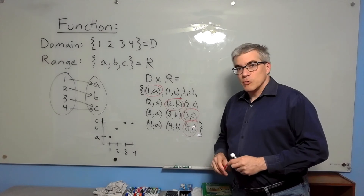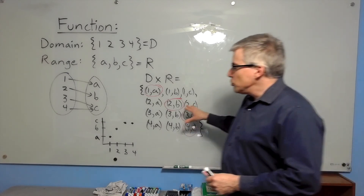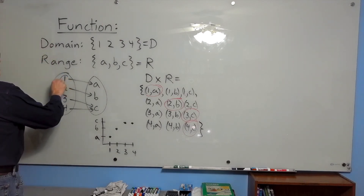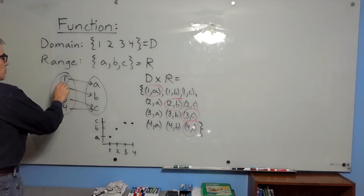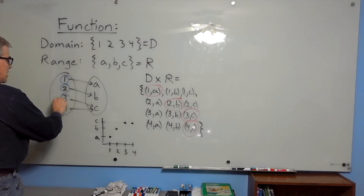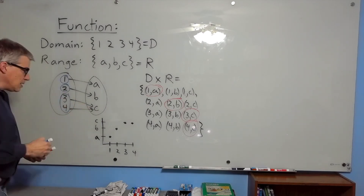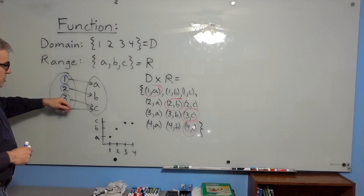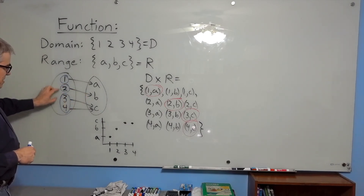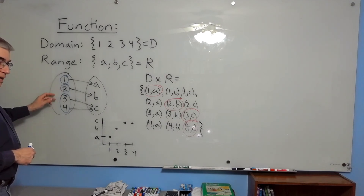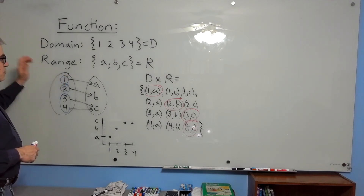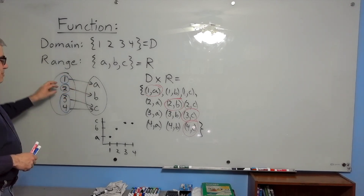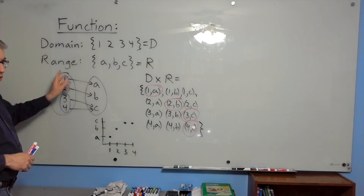You can also view the function as a partition of the domain. 1 maps to a, 2 maps to b, and 3 and 4 both map to c. This is a partition because a function cannot map one input to two outputs, so these sets can't ever overlap without being identical. Any function means you have a partition on the domain, in addition to the information about what each part of the partition maps to.